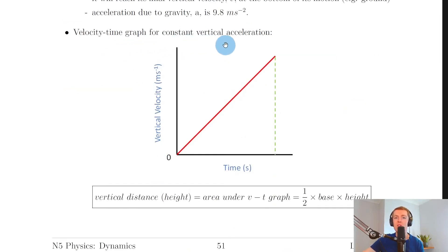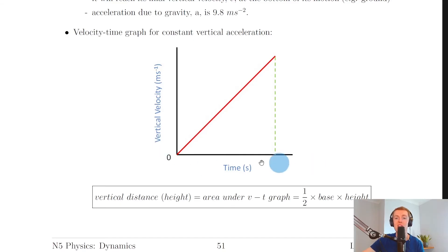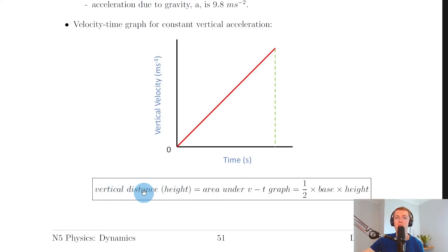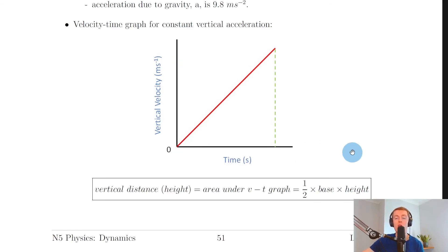The velocity-time graph for constant vertical acceleration shows a positively sloping diagonal line, representing uniform acceleration. We have vertical velocity in metres per second against time in seconds. To find the vertical distance travelled by the projectile — its height — you take the area under the vertical velocity against time graph. Because the shape is a triangle, you use half times base times height. So if given or asked to draw a velocity-time graph, know you can use it to find vertical distance.